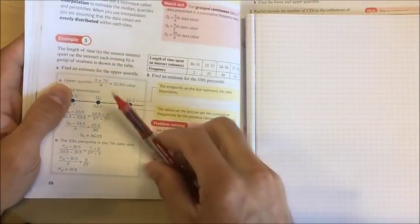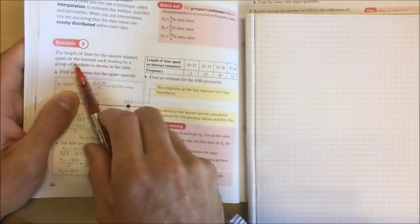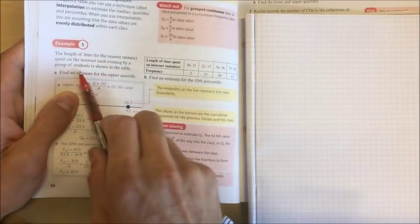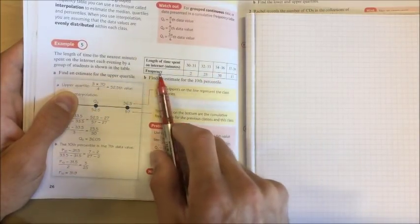In this situation they're asking us to find the upper quartile in example 5. This is the length of time to the nearest minute spent on the internet each evening by a group of students shown in this table. Here's the length of time spent on the internet and here are the frequencies.